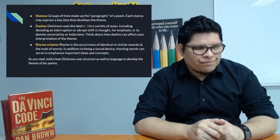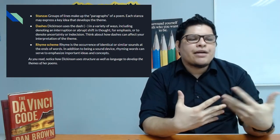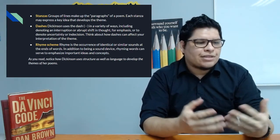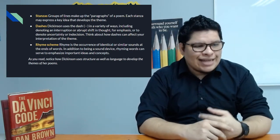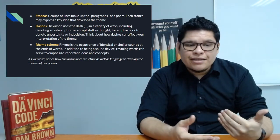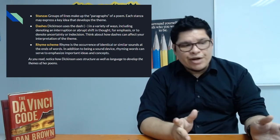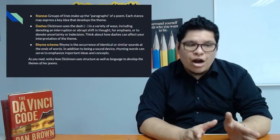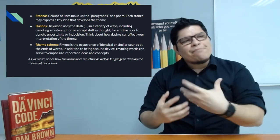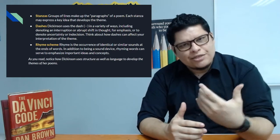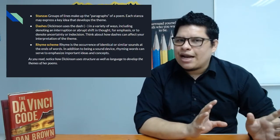Then we got to know the rhyme scheme. Again, rhyme is the occurrence of identical or similar sounds at the ends of words, specifically in the words that end the lines that make up a stanza. In addition to being a sound device, rhyming words can serve to make emphasis on important ideas and concepts. When we read, we have to notice how Dickinson uses the structure as well as the language to develop the themes of her poems. You may be thinking, well, how is the organization or the structure of a poem going to help me understand the theme?